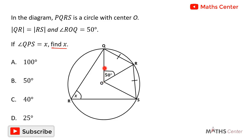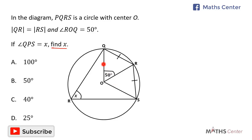From the center of a circle to a point on the circumference gives us the radius. So OQ, OR, and OS are all radii. In the same circle, all radii are equal, so OQ equals OR equals OS. The chord QR equals RS.